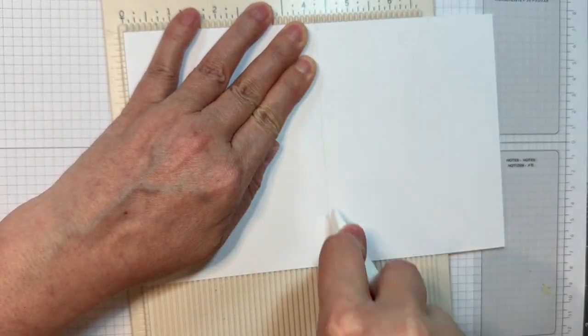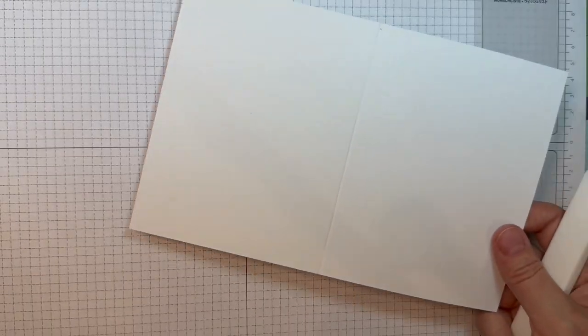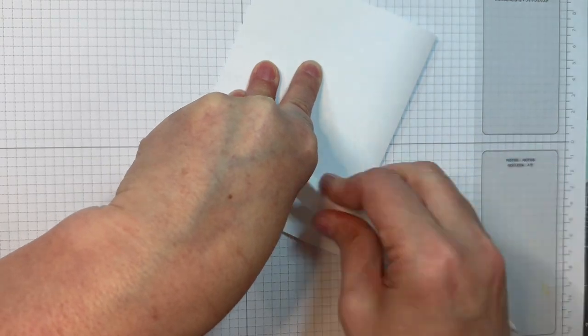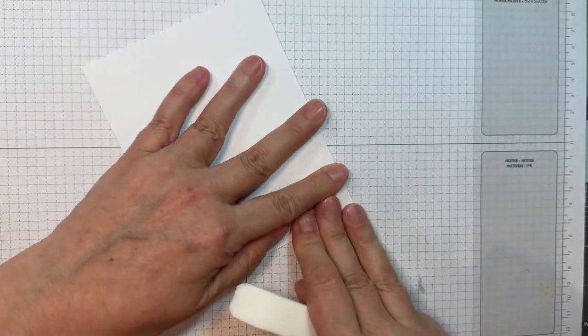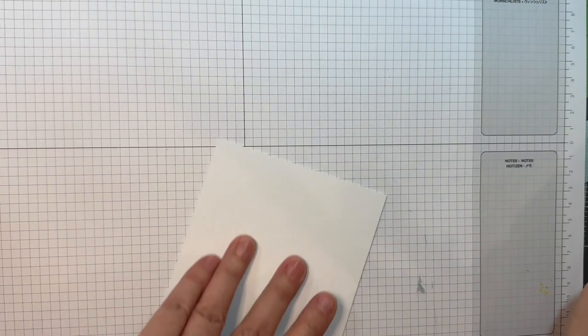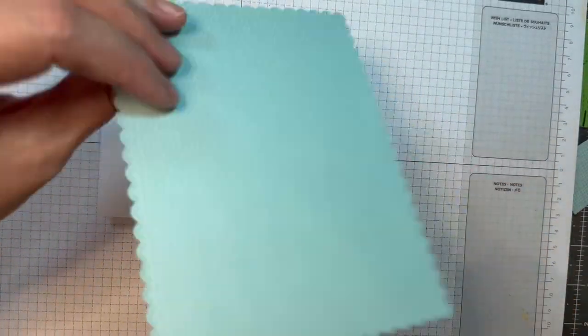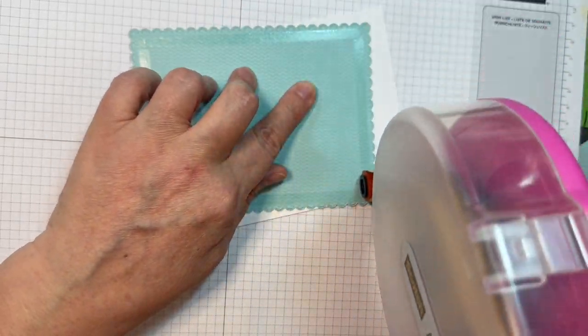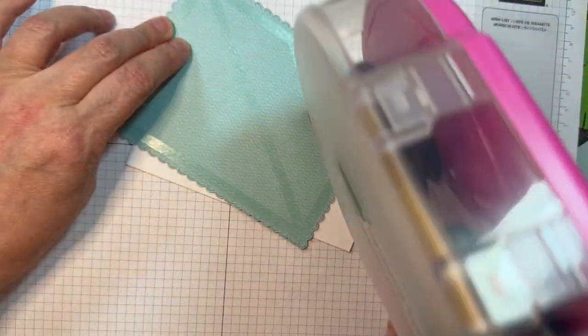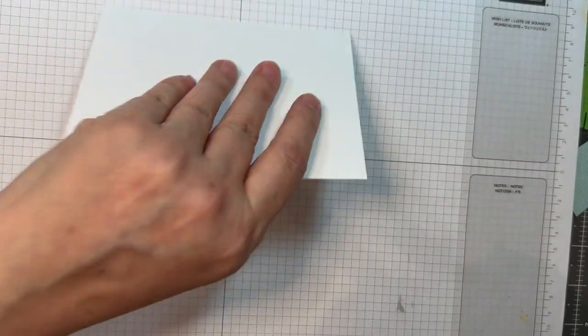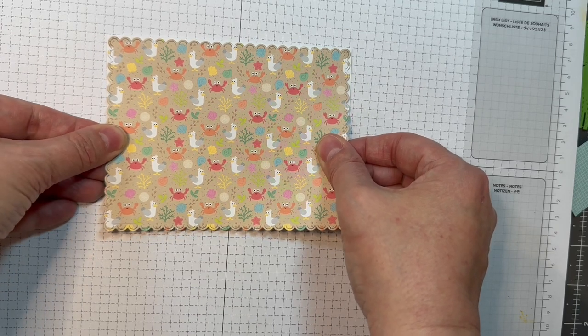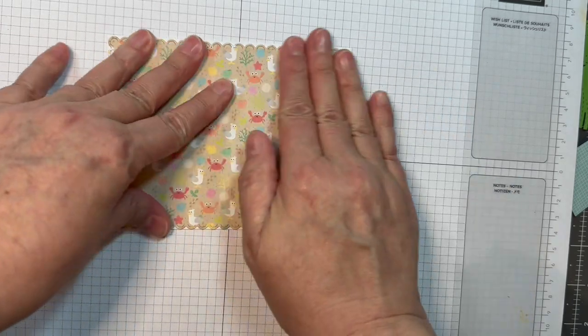This is a piece of paper tray ink white cardstock that's cut at eight and a half by five and a half inches scored at four and a quarter to give you a landscape style A2 sized card. I cut out paper from that Seaside Summer Pad with the scalloped rectangle die and I'm going to stick that down on the front using ATG tape. It just has a fun beach pattern with little crabs on it.